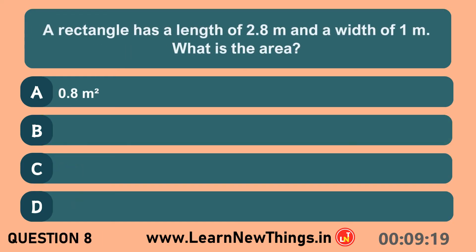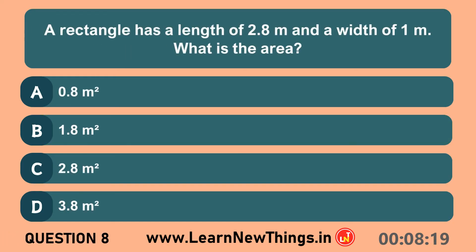A rectangle has a length of 2.8 meters and a width of 1 meter. What is the area? 2.8 meters square.